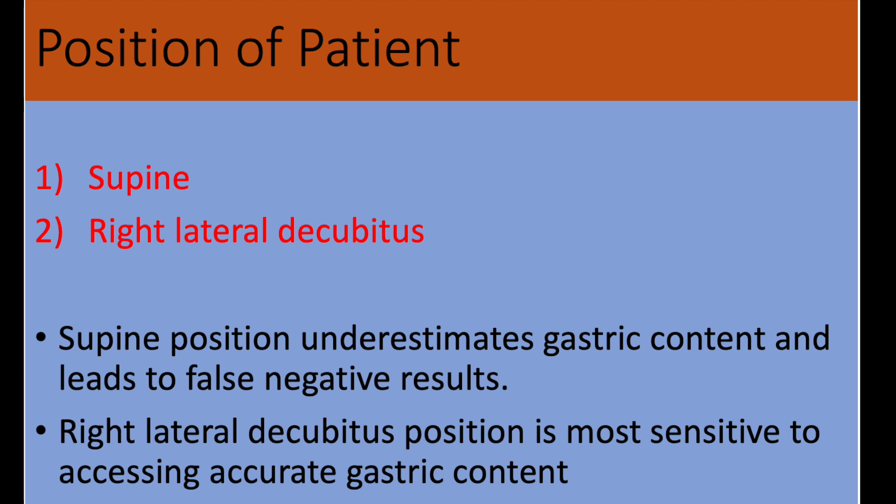Gastric ultrasound can be performed either in supine or right lateral decubitus position. The supine position underestimates the gastric content because in this position food contents gravitate toward the fundus. Large quantities can be visualized in this position but smaller quantities can be missed, leading to false negative results. The right lateral decubitus position is more sensitive because in this position food contents gravitate toward the antrum, giving access to accurate gastric content, making it the ideal position to confirm antrum content.